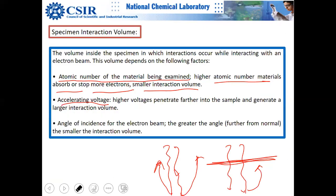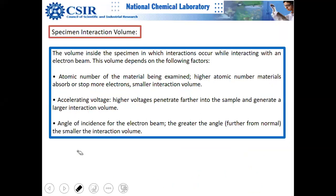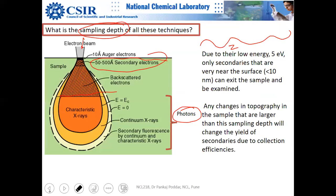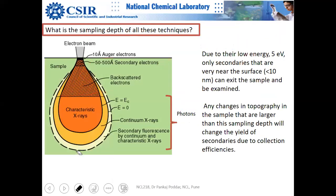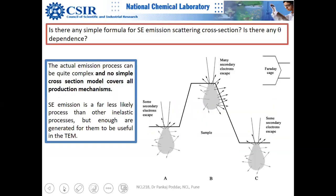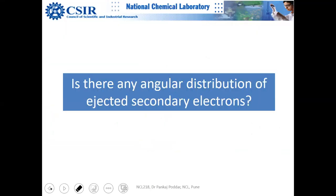A student asked: the sampling depth was said to vary from 50 to 500 angstroms with different topographies and atomic numbers. The next slide provides an example of this.